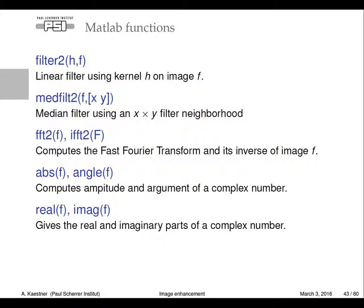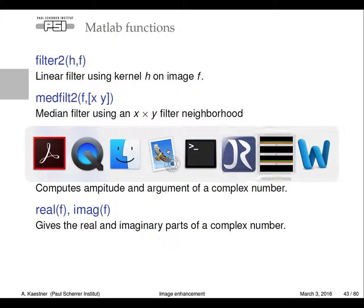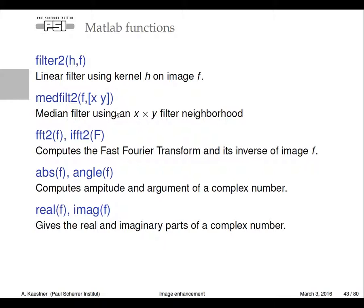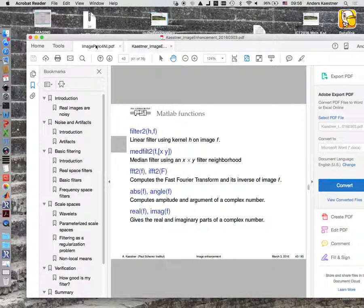Again some MATLAB functions. Filtering, convolution. Filter2 does 2D filtering. Medfilt does median filtering. Then we have Fourier transform parts. Looking at angles, we can take absolute and angle of the frequency component. Since Fourier transform produces complex valued information, we can also look at real part and imaginary part.